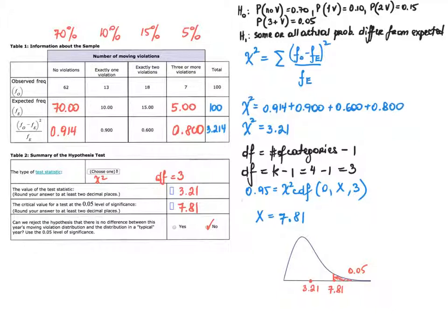The first question in Table 2 asks you to identify the type of test statistic. Since we're working with a goodness of fit test, it will be chi-squared. Once you choose this option, you will be asked for the degrees of freedom. Degrees of freedom are found by taking the number of categories — in this case four — and subtracting one, giving three degrees of freedom. The value of the test statistic is 3.214, which rounds to 3.21 at two decimal places.